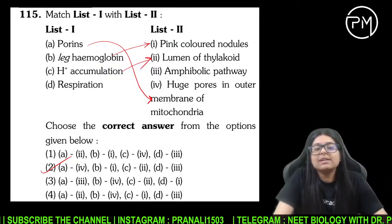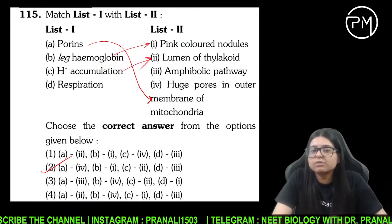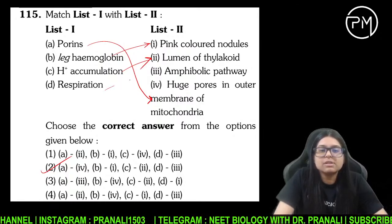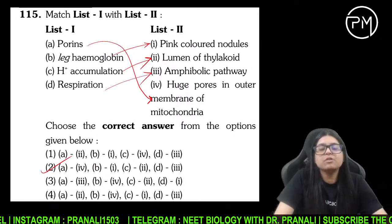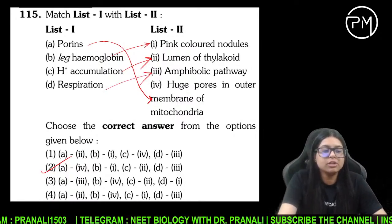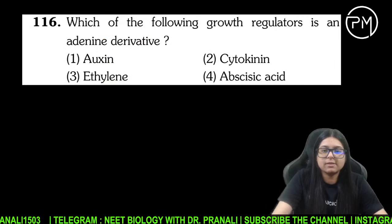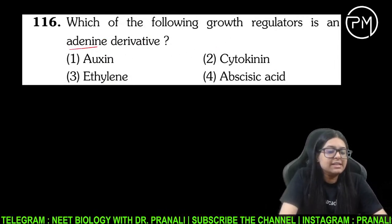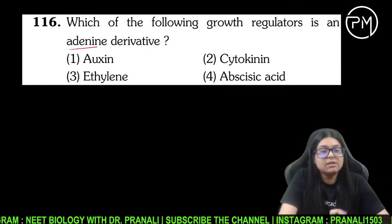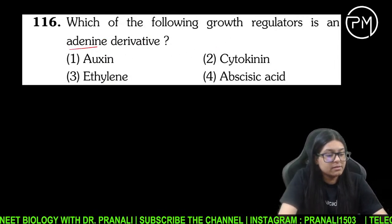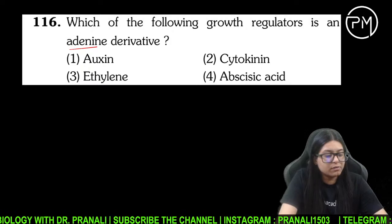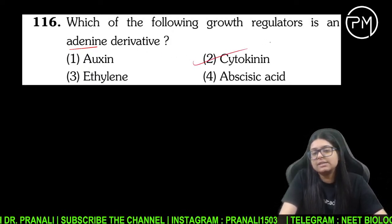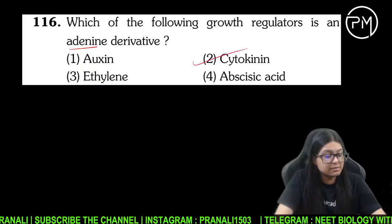H+ accumulation kahan hota hai — thylakoid ke lumen mein hota hai. Aur respiration ek amphibolic hai — yaani ki catabolic aur anabolic dono cheezein ho rahi hain.